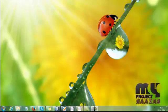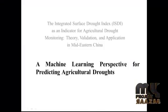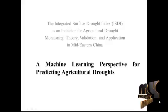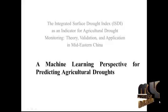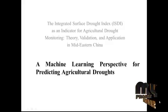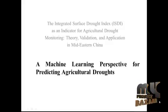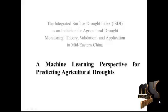Welcome to myprojectproper.com. The project title is 'The Indicators of ISDI Draft Index as an Indicator for Agricultural Draft Monitoring: Theory Validation and Application in Mid-Eastern China.' The modified title for this project is 'A Machine Learning Perspective for Predicting Agricultural Droughts.'